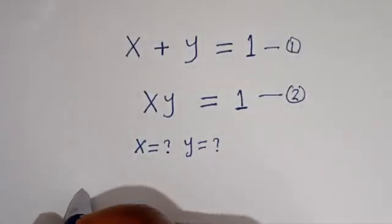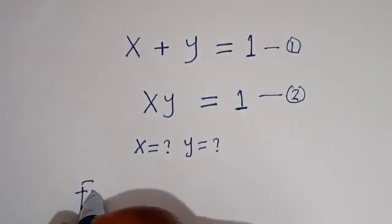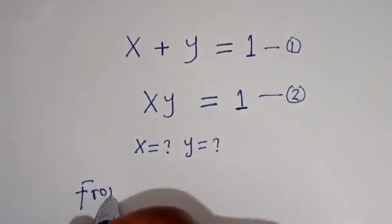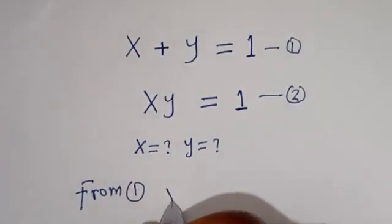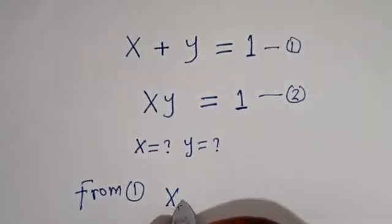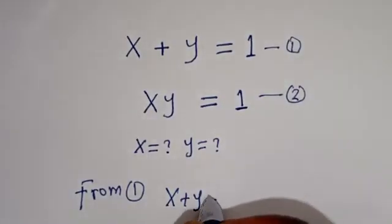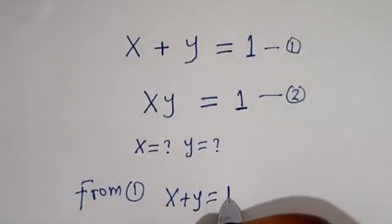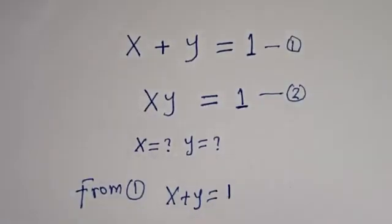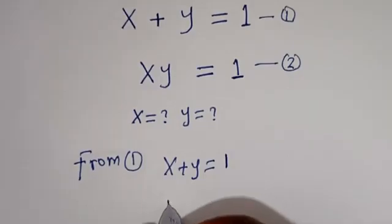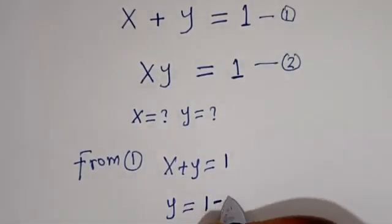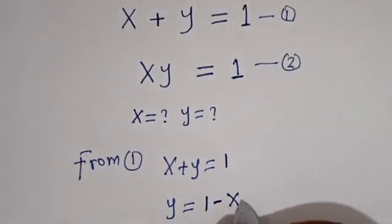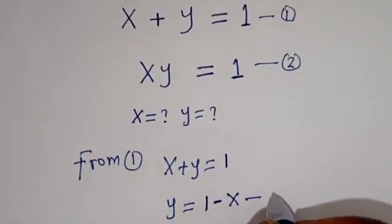From equation 1, we have S plus Y is equal to 1. Then Y is equal to 1 minus X. Let's call this equation 3.